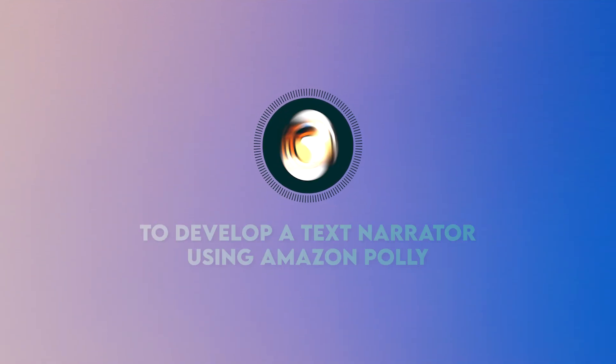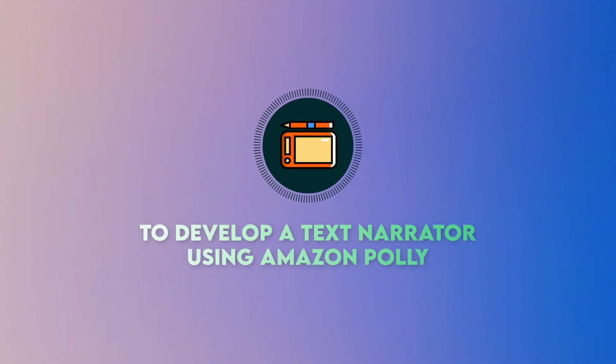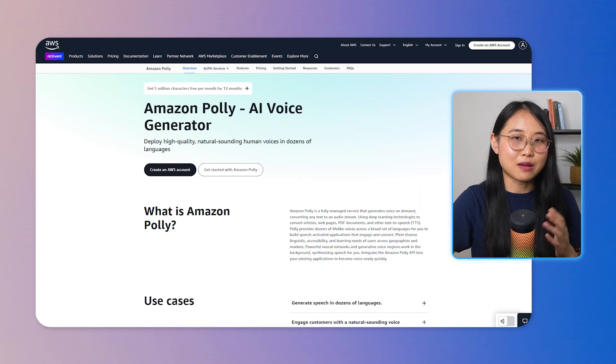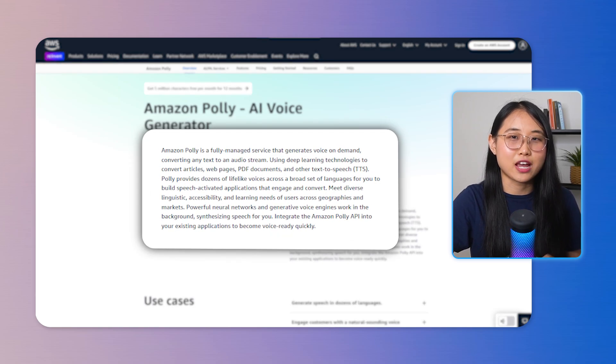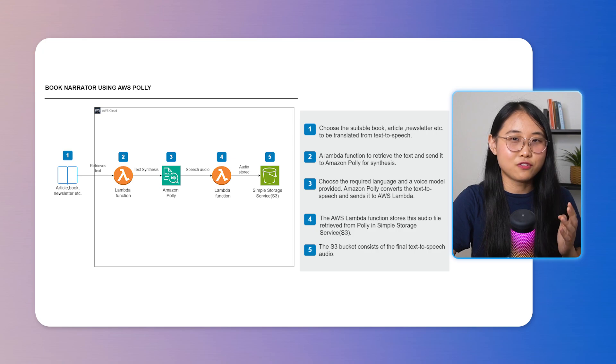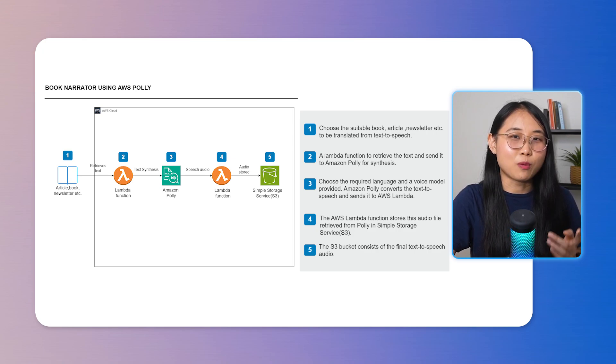Moving on to the third project — this one is to develop a text narrator using Amazon Polly. Amazon Polly is a service that turns text to speech, allowing you to create an application that can talk. This is great when you don't feel like reading something and just want to listen to the audio version — one example is converting a blog post into an audiobook. To start, find a piece of text you'd like spoken out, which could be anything from books and articles to newsletters and scripts.